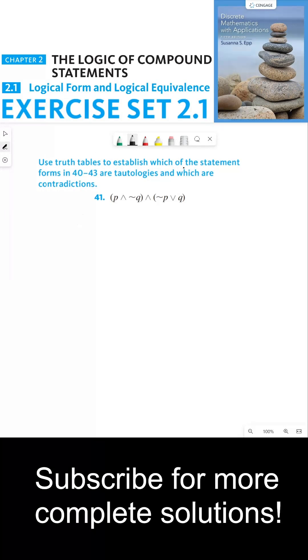Use truth tables to establish which of the statement forms in 40 through 43 are tautologies and which are contradictions. So first we have to set up our truth table.